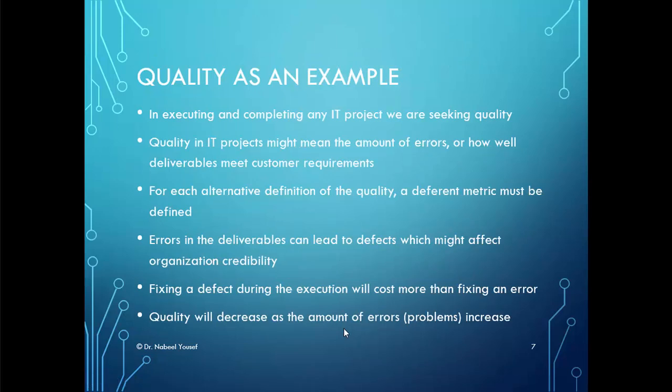To understand project attributes and the proper selection of metrics, let's take quality as an example. Quality in IT projects might mean the amount of errors or how well deliverables meet customer requirements. For each alternative definition of quality, a different metric must be defined. For example, the amount of errors should be measured by the number of errors found in a deliverable or the percentage of requirements met in the deliverable. Errors can lead to defects which might affect organizational credibility.